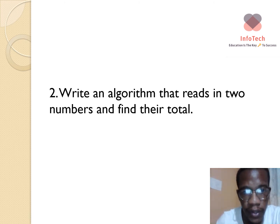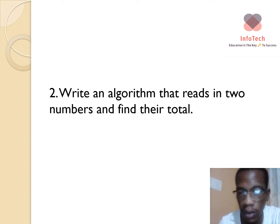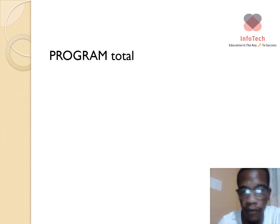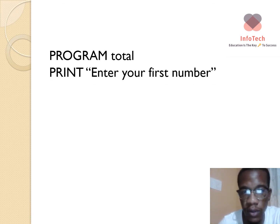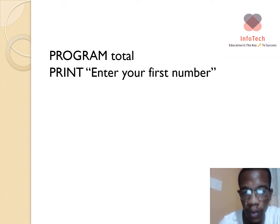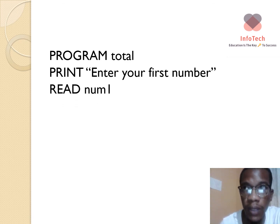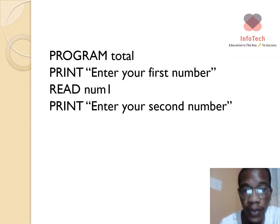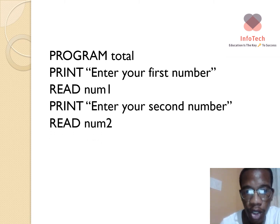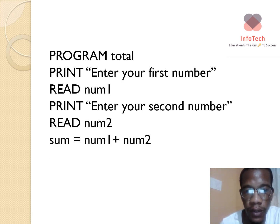The second question requires us to write an algorithm that reads in two numbers and finds their total. Like the first question, we introduce a name for the program — we call it 'Total' — then prompt the user to enter the first number and introduce a variable called number one to store it. We then prompt for a second number stored in a variable called number two.